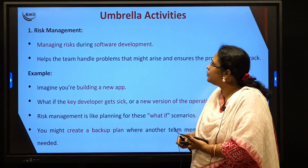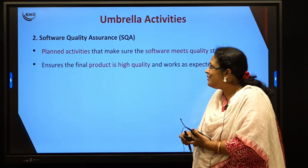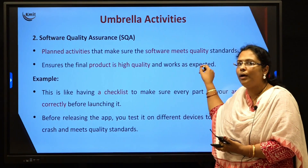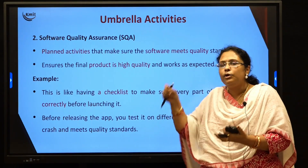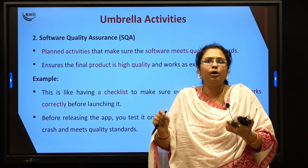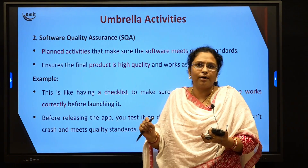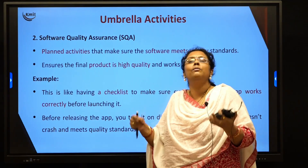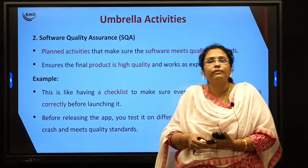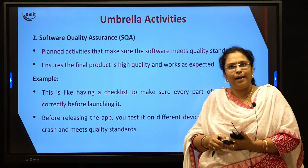The next umbrella activity is software quality assurance — at every step you should make sure the software is meeting quality standards. You have to make a checklist: for example, if your team has developed a login page, you check whether it is successfully working. If it is working successfully, you are achieving the quality of the product. At each step, make sure your software is maintaining that particular quality.